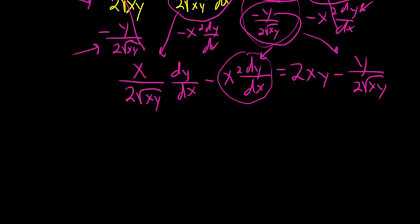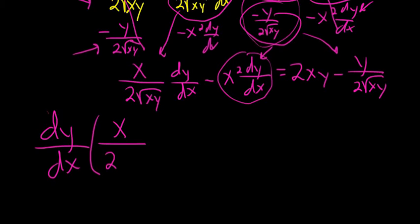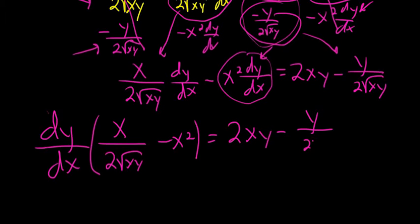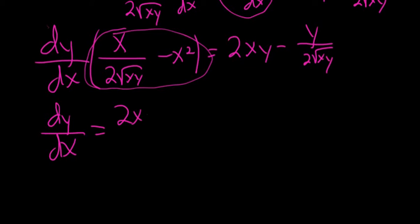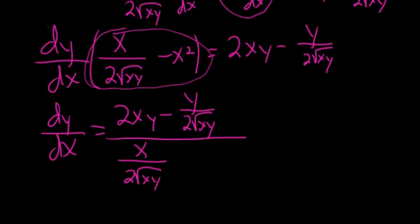So we're looking for dy/dx. Maybe now we can factor out dy/dx. So we have dy/dx times x over 2 square root xy minus x squared equal to all of this stuff over here: 2xy minus y over 2 square root xy. To finish, we're going to divide by this. So we end up with dy/dx equals 2xy minus y over 2 square root xy, over x over 2 square root xy minus x squared.